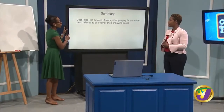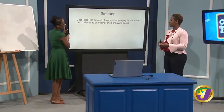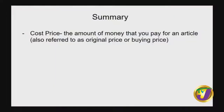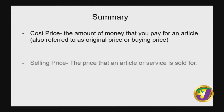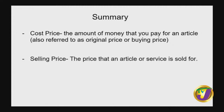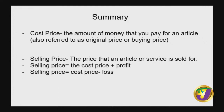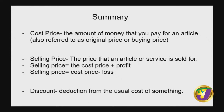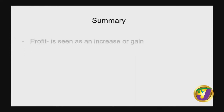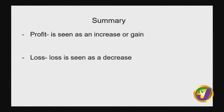In summary: cost price is the amount of money you pay for an article or service, also referred to as original price or buying price. Selling price is the price that an article or service is sold for — selling price equals cost price plus profit, or cost price minus loss. Discount is a deduction from the usual cost of something. Profit is seen as an increase or gain. Loss is seen as a decrease.